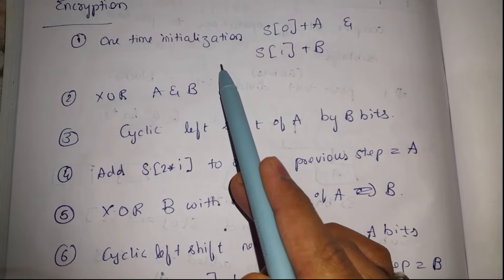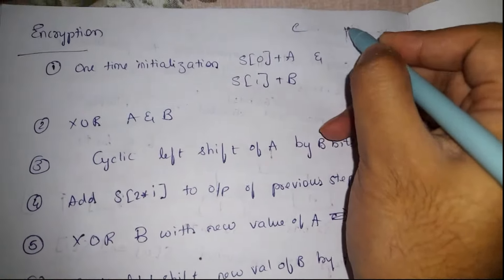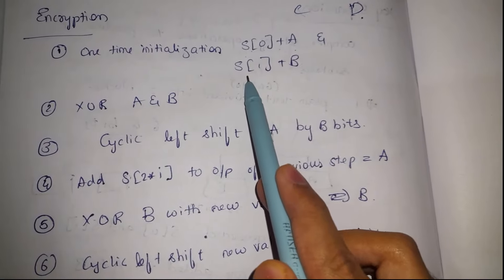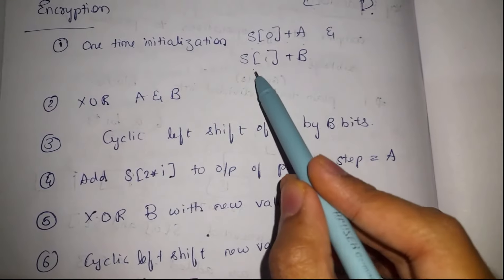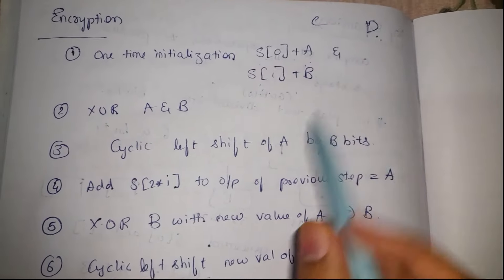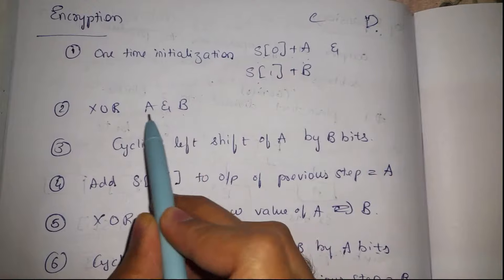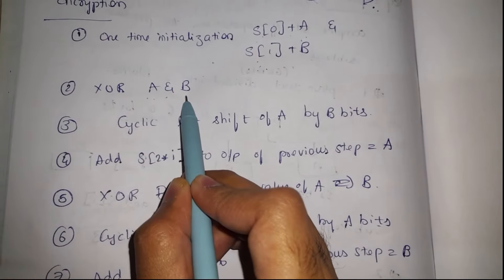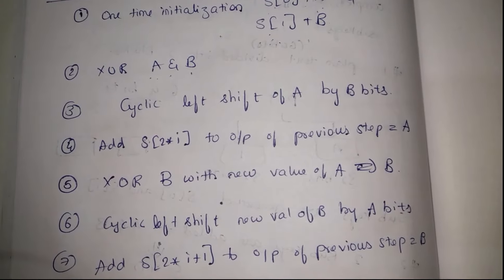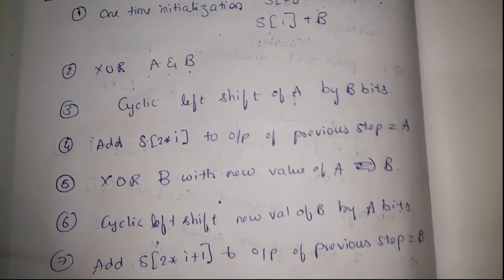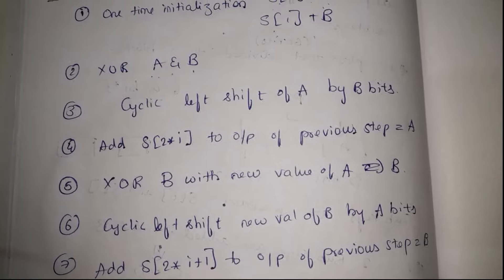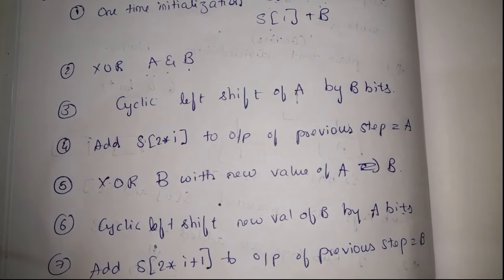For encryption, there is a one-time initialization for c and d. The initial values are combined with S[0] and S[1] — the respective keys for the first round — to obtain the initial values of c and d. Then we perform the XOR operation of a and b. The three steps are: XOR operation, cyclic left shift, and addition of sub-keys to obtain new values for the blocks.